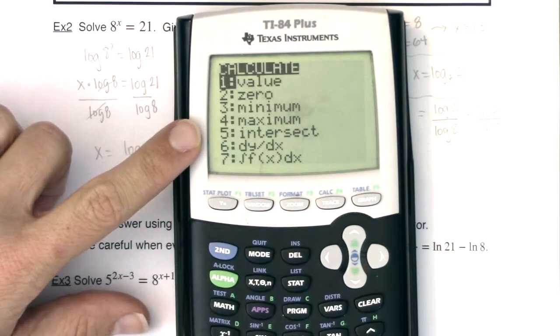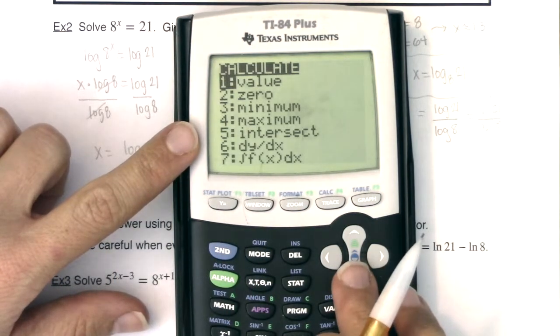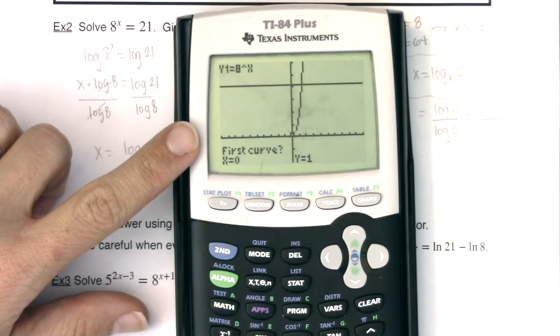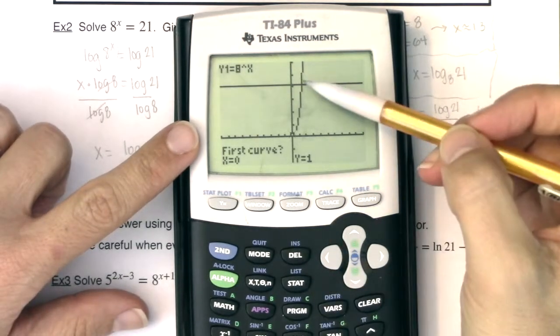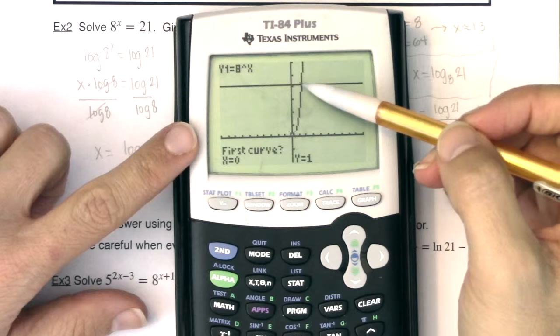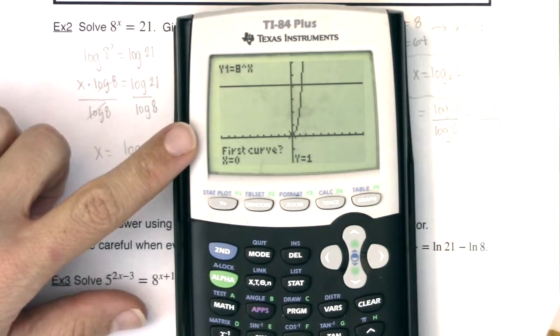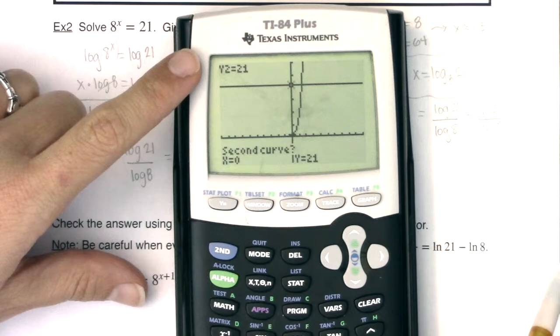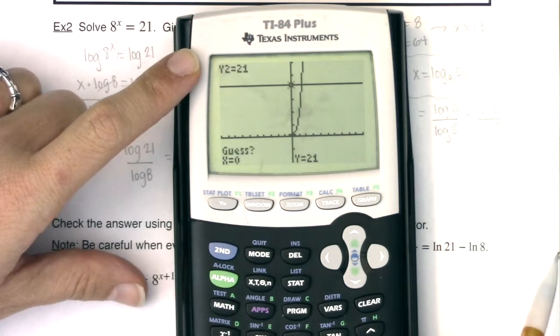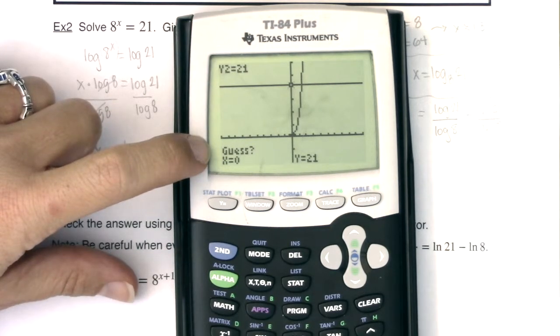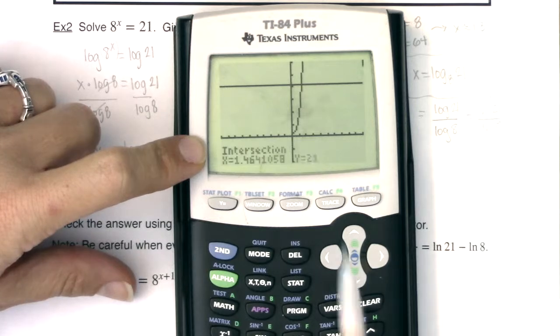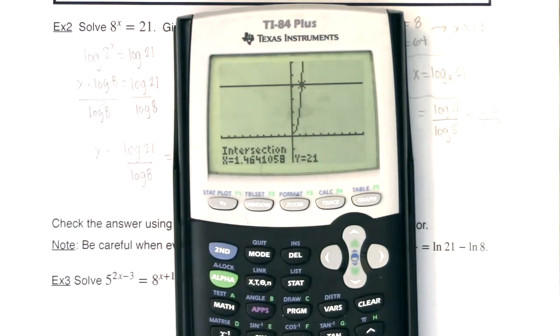We're going to go with option five. So you can either scroll down to five and hit enter, or just hit the number five. And then because there's only the one intersection point, I just need to hit enter, enter, enter. So we'll go, I want the first curve to be 8^x. I would like the second curve to be 21. And you can type in 1.5 as your guess, or you can just hit enter through guess. And there's my x coordinate of 1.464.